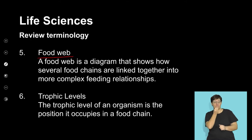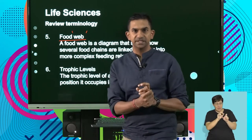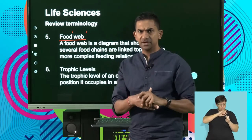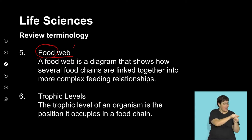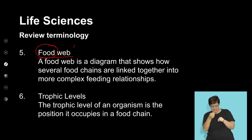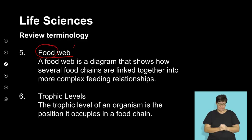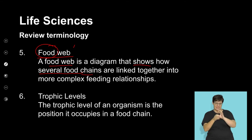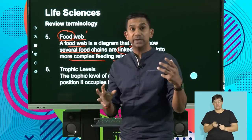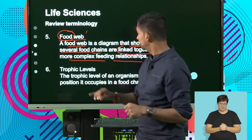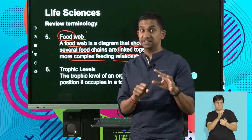A food web is a diagram that shows how several food chains are linked together in more complex feeding relationships. When spiders spin their webs, they create intricate networked patterns with various branches — similarly, a food web shows the interconnected food chains between different species or organisms in an ecosystem. Food chains show unilateral movement from one to the next, while a food web shows the interconnectedness of complex feeding relationships.